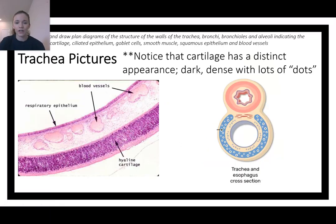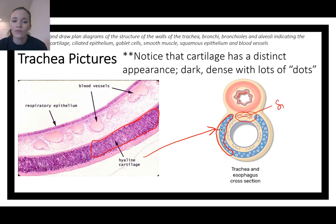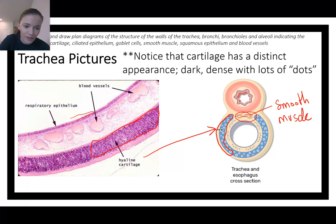In the pictures, cartilage always shows those little dots in a denser, darker color. Smooth muscle typically looks like sheets layered on top. If we zoomed in on the actual picture we could see the cilia as a fuzzy layer — that's the epithelium — with blood vessels running throughout.